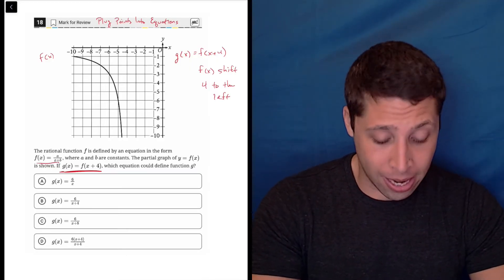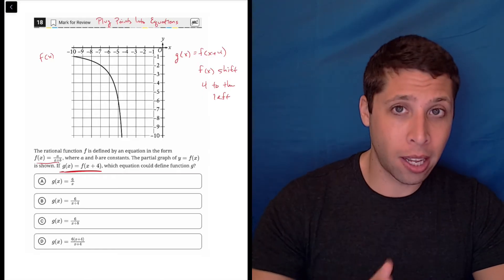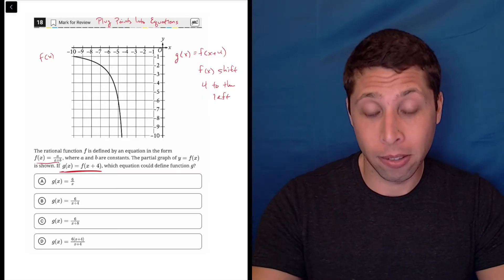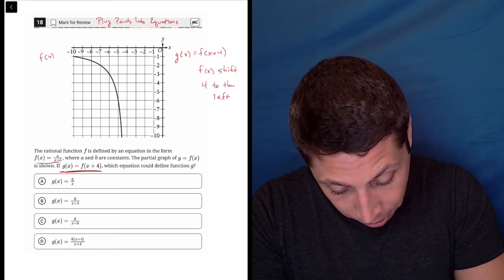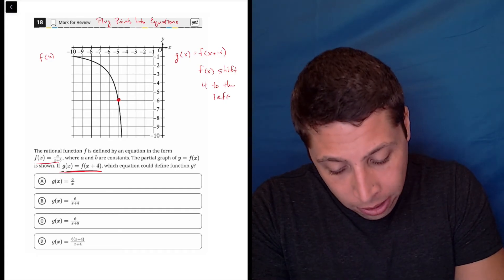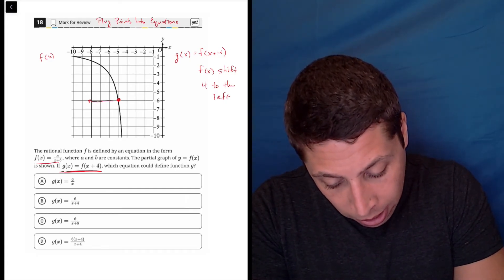So what that means, then, is any point that's currently on the f graph is going to move left four units. So let's just take a point. Let's try this one right here. Negative five, negative six. So this is an f point, and it's going to go four to the left.